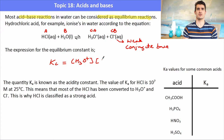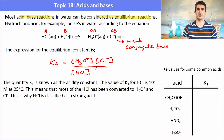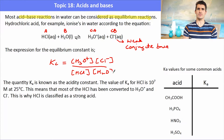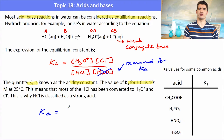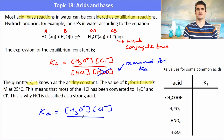We can write an equilibrium expression for this process. Kc equals concentration of products over concentration of reactants, which gives us the concentration of hydronium multiplied by the concentration of chloride over the concentration of the acid multiplied by the concentration of water. The Ka value, the acidity constant, is slightly different. To write the acidity constant for hydrochloric acid, which is 10 to the 7, we remove water because water is said to be a constant at about 55 molar. So the Ka value for hydrochloric acid would be the concentration of H3O+ multiplied by the concentration of Cl- divided by just the concentration of HCl.